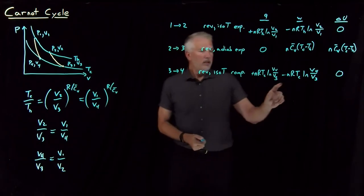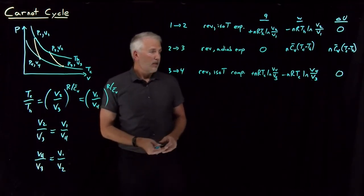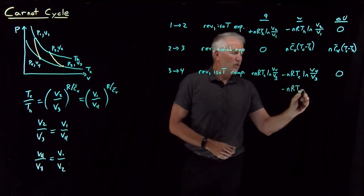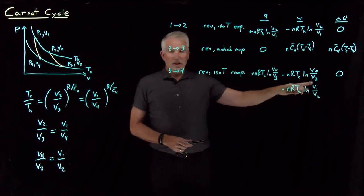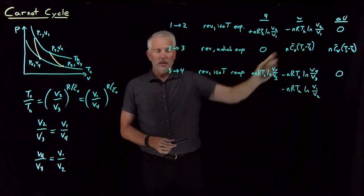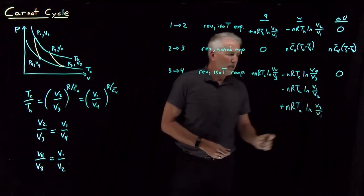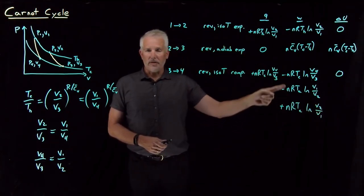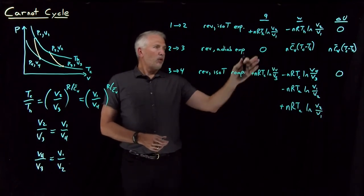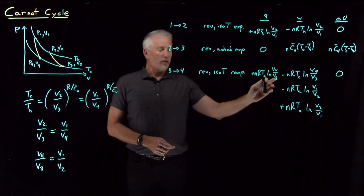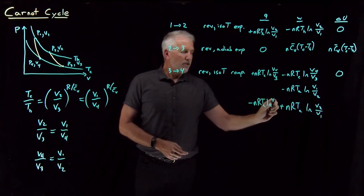So when I write minus NRT_cold log of V4 over V3, I can equivalently write V1 over V2, or — flipping positions to match the earlier form — positive NRT_cold log V2 over V1. Any of those three ways of writing it is exactly the same. Similarly for heat: NRT_C log(V4/V3) can be written as V1 over V2, or equivalently minus NRT_C log(V2/V1).